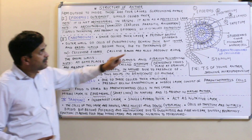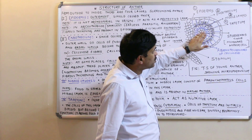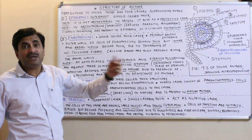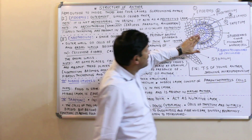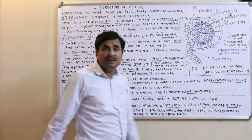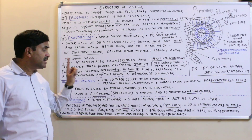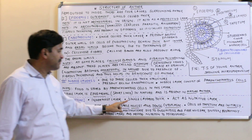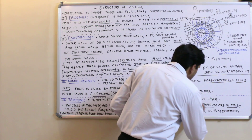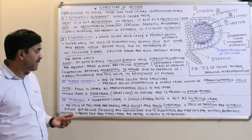The tapetum is the innermost layer surrounding the sporogenous tissue, also called microspore mother cells, which will later undergo meiotic division to form microspores. The microspores are provided nutrients by the tapetum layer. It is the most important layer — single layer thick — and acts as a nutritive layer providing nutrition to the developing microspores.